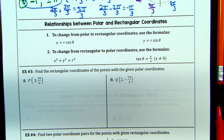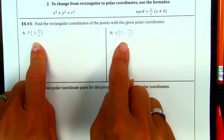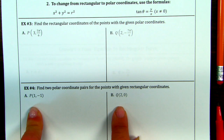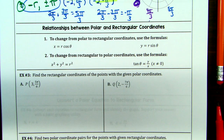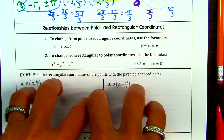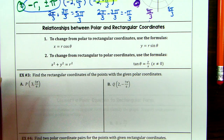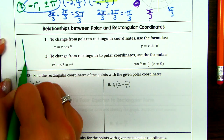One of the big things we're doing in this section is toggling between rectangular world and polar world and vice versa. You'll be given polar coordinates and change them to rectangular, or given rectangular and change them to polar. To do that, we need four really important formulas. We'll use these formulas many, many times — not just for coordinates but also tomorrow for equations.